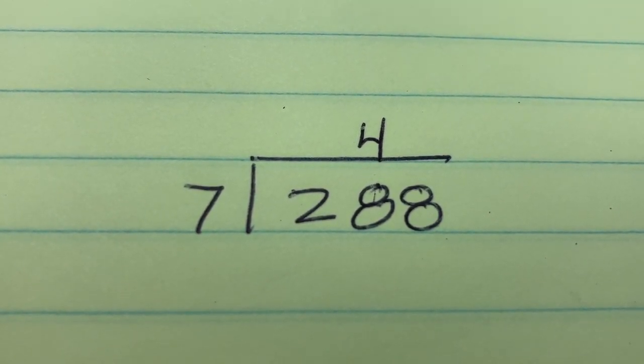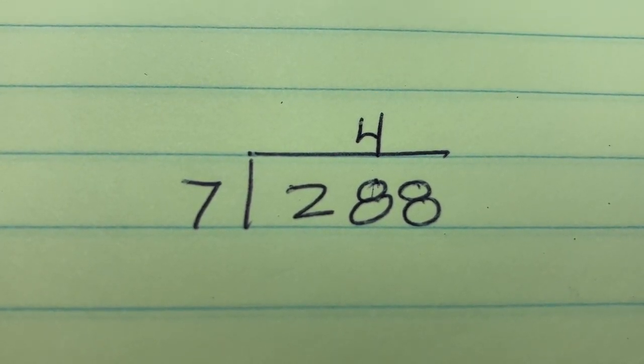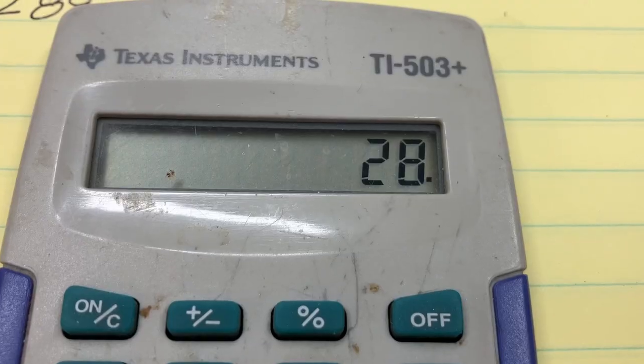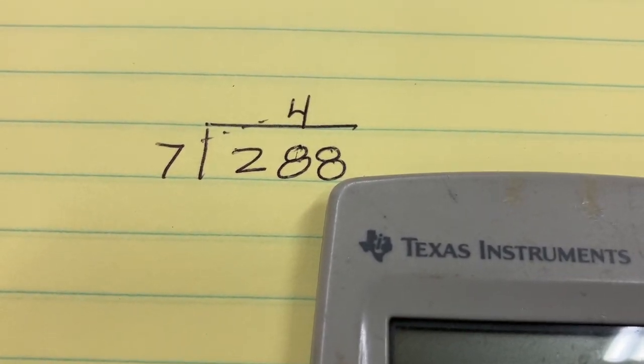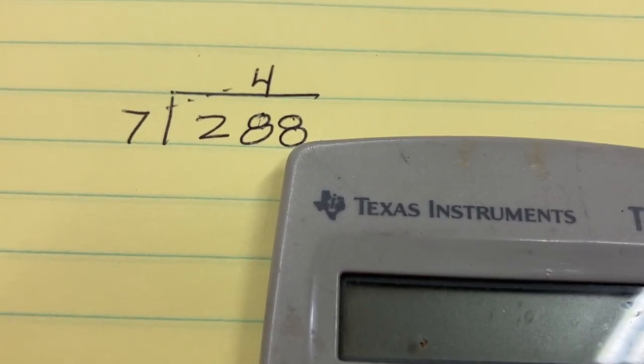Now we need to know what is 7 times 4. I think it's going to be 28, but let's check. Yeah, that worked. 7 times 4 is 28, and we're going to put the 4 right there, and we're going to put the 28 underneath. Keep watching.